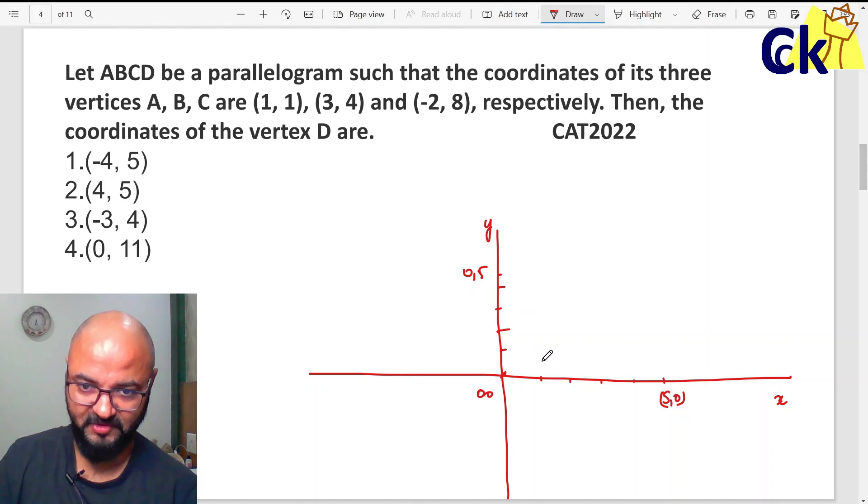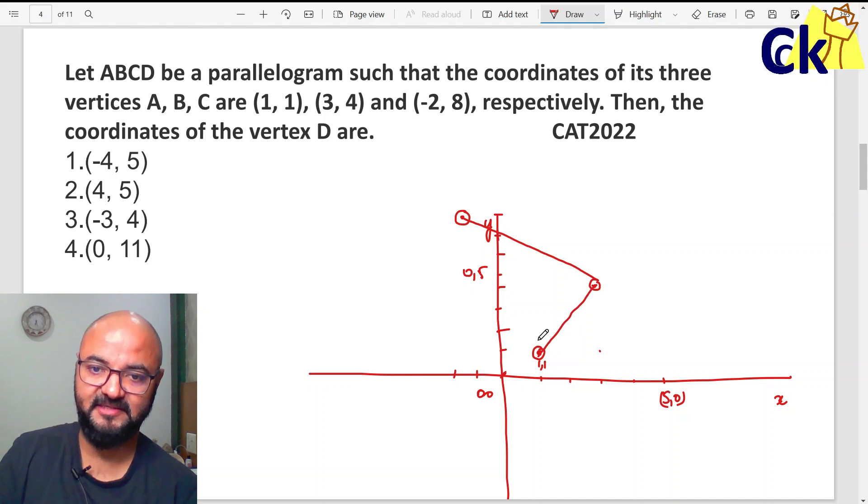First is 1 and 1. No problem. 1 and 1 mostly will be here approximately. Second is 3 and 4. X value 3 and Y value 4 more probably will be somewhere here. First point, second point. Third point is minus 2 and 8. 5, 6, 7, 8 will come mostly here. So third point is here. So if it is a parallelogram, can you help me find out ki 4th point kaan pe jayega? 4th point most probably have to be here somewhere.